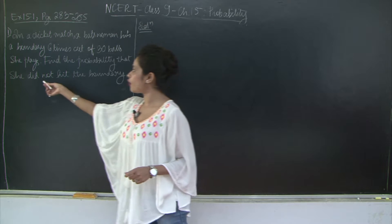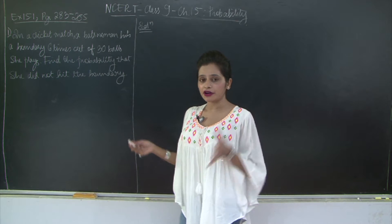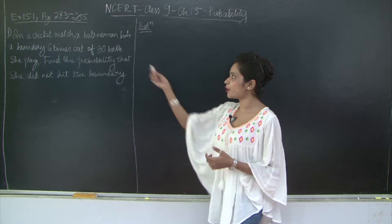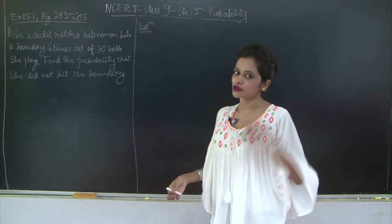So the probability that she did not hit the boundary would be the number of times she missed the boundary upon the total number of balls, which is going to be 24 divided by 30. Let's solve this.